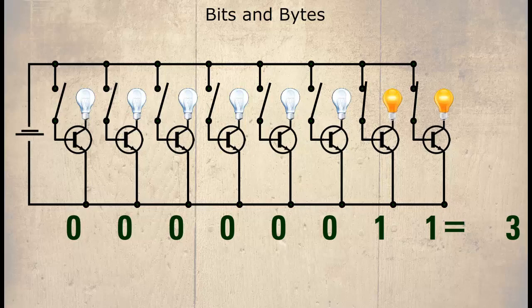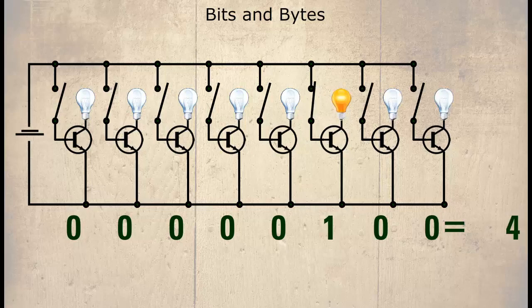As the transistors are switched on from right to left the numbers will increase. If this is the first time you have seen binary it can be a difficult concept to understand to begin with, since normally we would be using numbers from zero to nine. But in binary the only numbers that can exist are zero and one. Since we have exhausted the combination of the last two transistors, we shall switch them off and turn on the next one to the left. So the next binary number is 00000100 or decimal four.